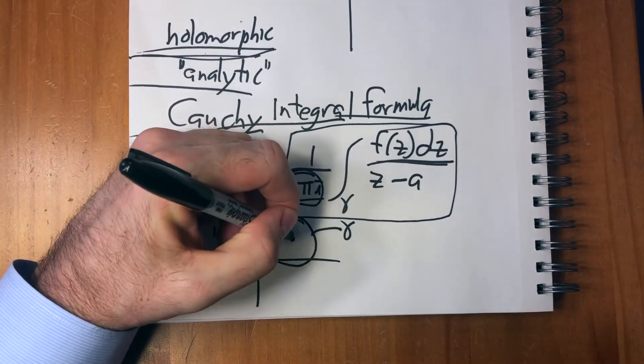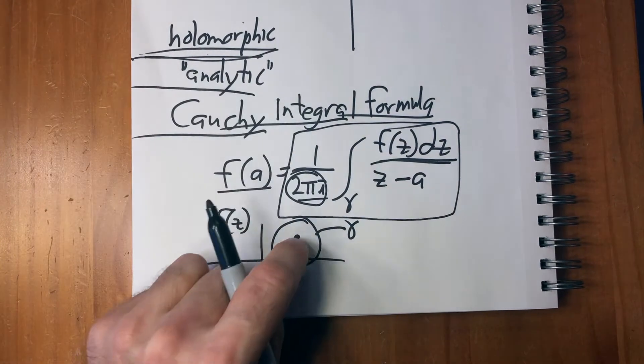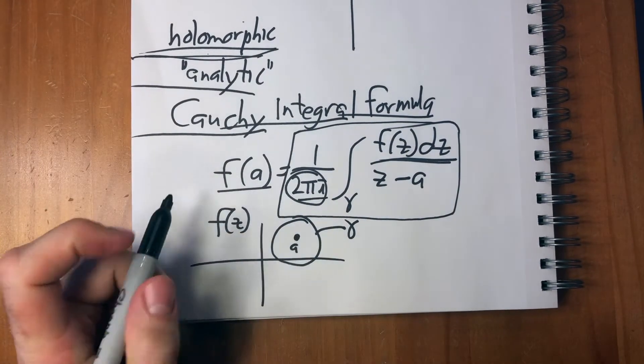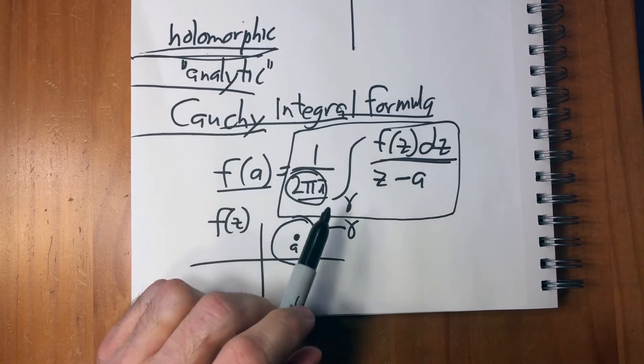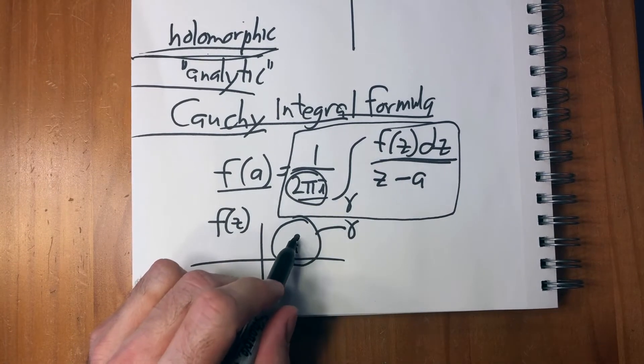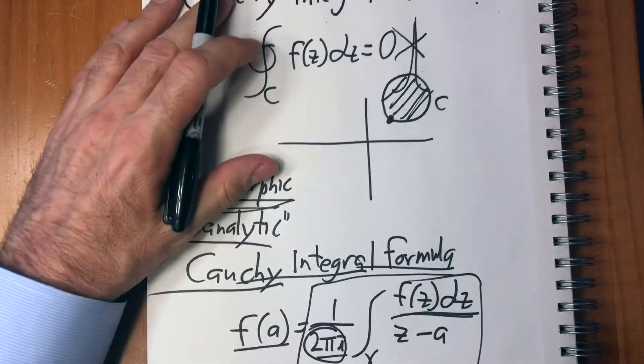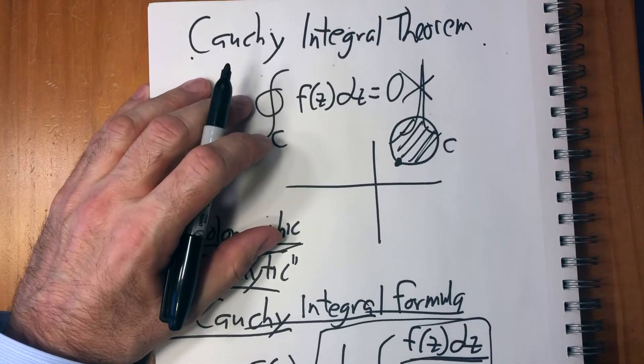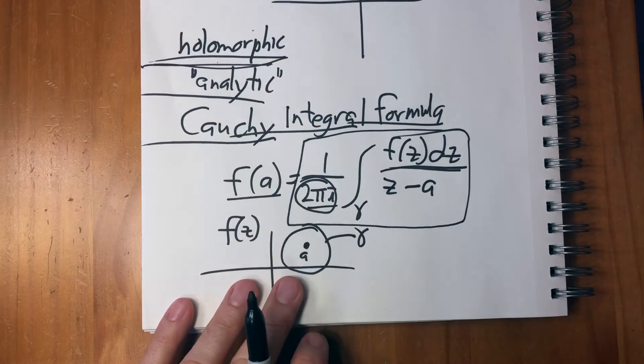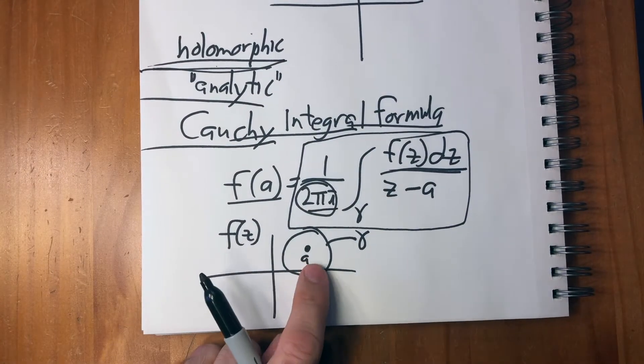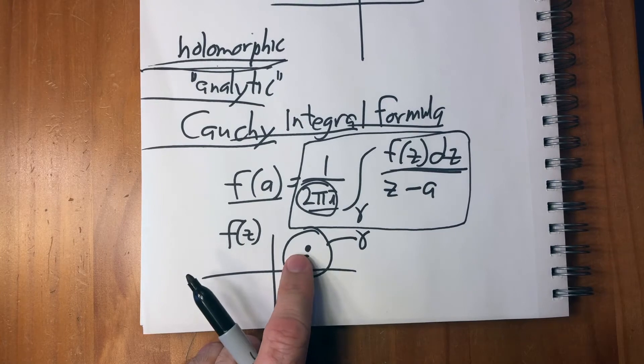And we want to know, there's just a point in here, A, we want to know what the value is there. What this says is that we can figure out this value, basically using the Cauchy integral theorem to figure out what any point inside this area is.